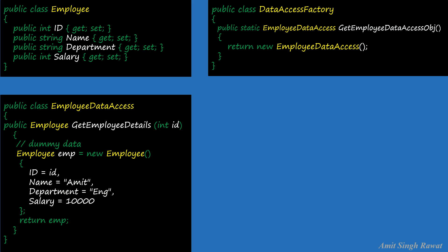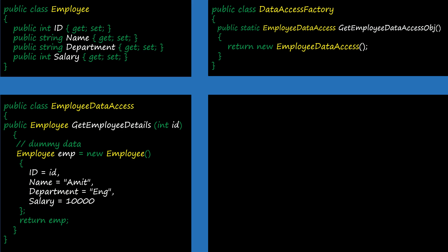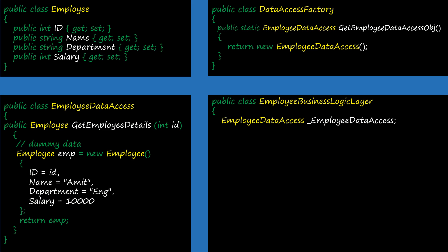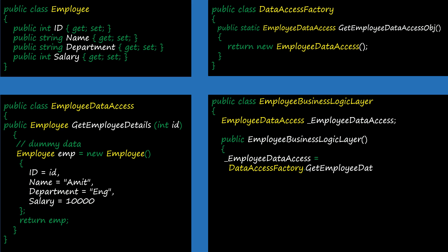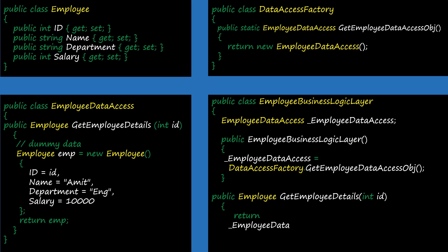Our final class is EmployeeBusinessLogicLayer: public class EmployeeBusinessLogicLayer. Let's create a variable of type EmployeeDataAccess named _employeeDataAccess. Let's create a constructor — EmployeeBusinessLogicLayer — which assigns the object of EmployeeDataAccess to our local variable using the DataAccessFactory class. Then create a getEmployeeDetails method with id as an input parameter, which returns employee details using the EmployeeDataAccess class. We are done with our classes and this code will fulfill all our project requirements.